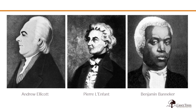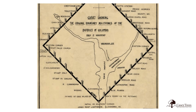However, he couldn't do it alone. L'Enfant hired Andrew Ellicott and Benjamin Banneker to survey the new boundaries of the 100 square mile diamond, which would later become the county of Washington and a smaller area within the square that would become the city of Washington, plus the federal core. In the latter part of 1791, the surveyors' roles were complete, and L'Enfant was able to begin designing the Washington DC that we see today.